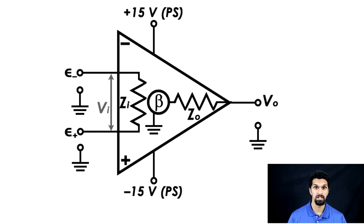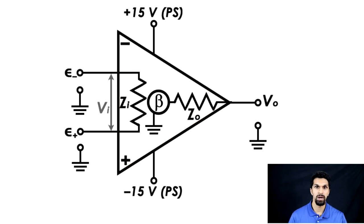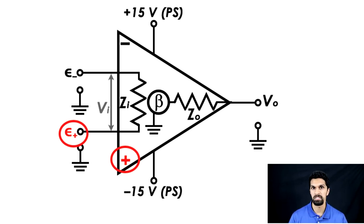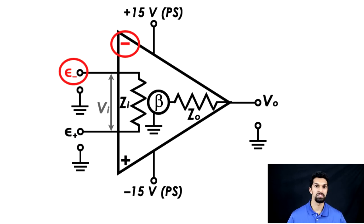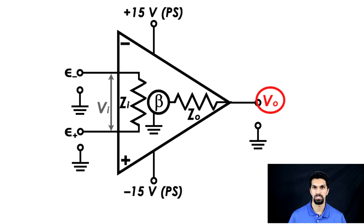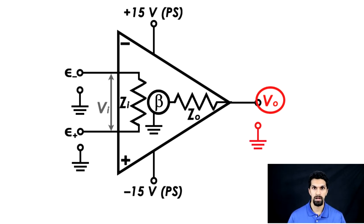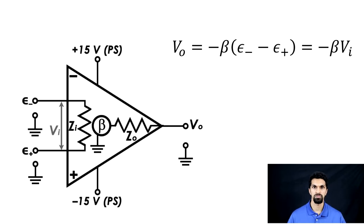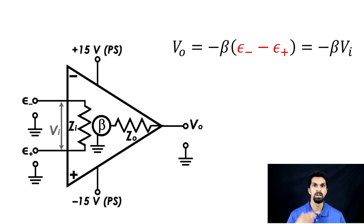The image in front of you is the circuit diagram of an operational amplifier. Symbolically, an op amp is represented as a sideways triangle. On the left-hand side are two inputs: the plus symbol (ε+) is the non-inverting input, and the minus (ε−) is the inverting input — both referenced to ground. On the right-hand side, Vo is the output voltage, also referenced to ground. The output voltage equals the difference between the two input voltages multiplied by a scaling factor called the gain, or beta.